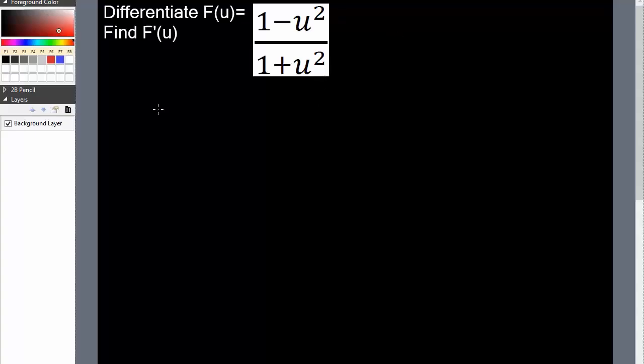Okay, so for this question we want to differentiate f of u, and to do this we will use the quotient rule. So let's get started. F of u derivative will equal the bottom term 1 plus u squared times the derivative of the top term, so negative 2u.